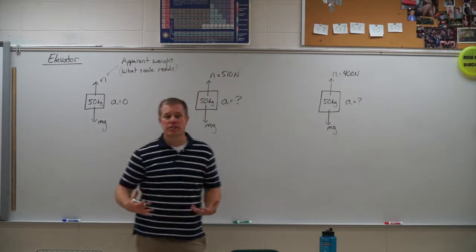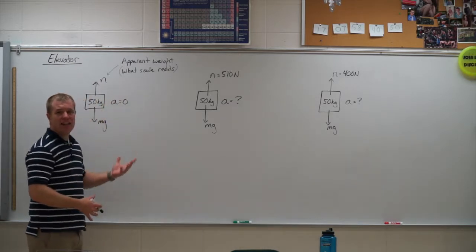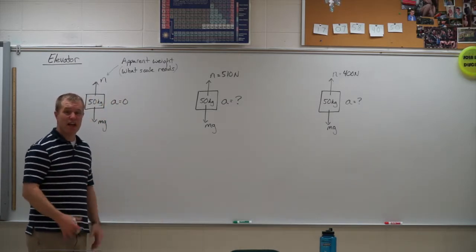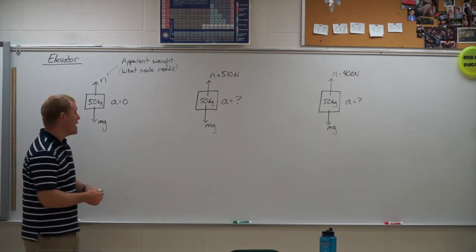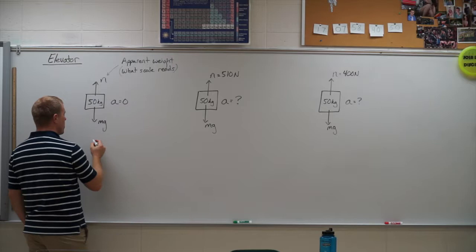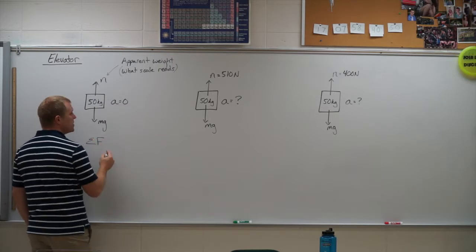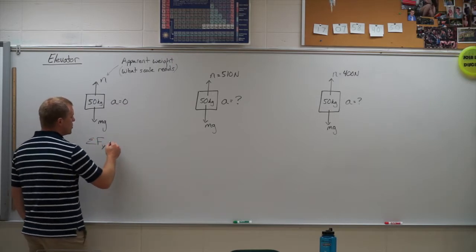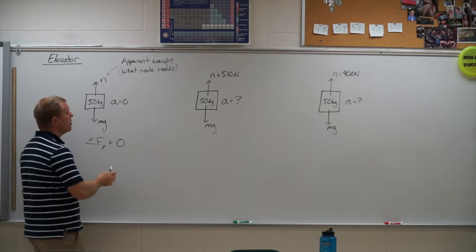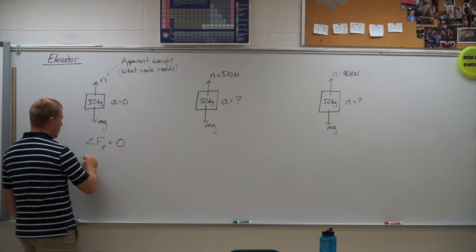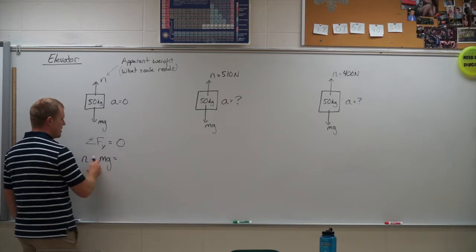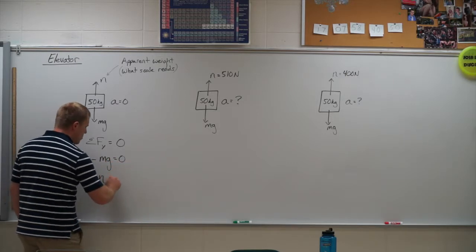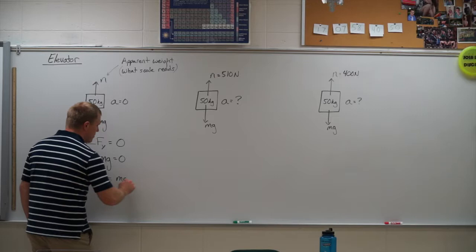So let's look at the situation if you're just standing on a scale and the elevator hasn't done anything yet or it's moving at a constant velocity. The scale should read your true weight because the acceleration is zero. So when I sum up the forces in the y direction, I should get zero. So here I have the normal force in the positive direction minus mg because it's in the negative direction equals zero. And so my normal force equals mg.